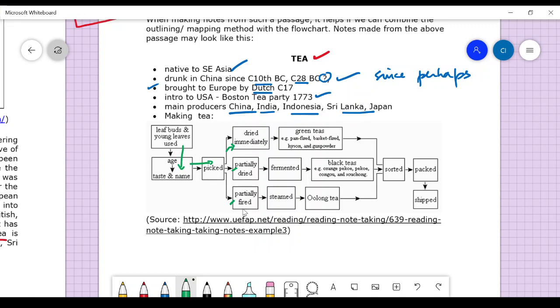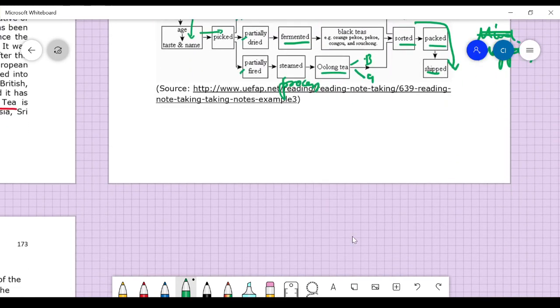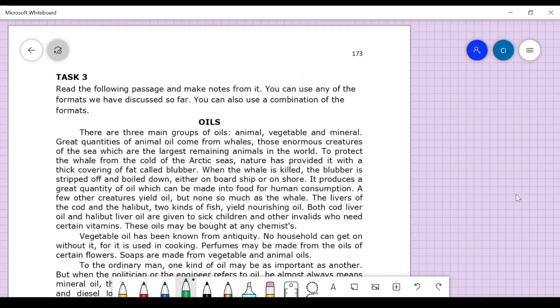Look at the process of tea making. Leaf buds and young leaves are used and preserved. How the age changes the taste - same for alcohol, the older it is, the higher the price. After that it is picked, then dried immediately, or partially dried, or partially fired. Pan-fried, basket-fried, high sun, gunpowder to make green teas. Then fermented to make black teas - orange pekoe, pekoe congo, and souchong. These are sorted, packed, and shipped. Steamed to make oolong tea, which is somewhere between green tea and black tea.